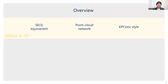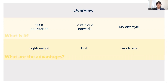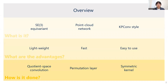As the title reveals, we developed an SE3 Equivariant Point Cloud Network. On a high level, it can be viewed as an equivariant version of the widely used Point Cloud Network, KPConv. Compared with existing Equivariant Point Cloud Networks, our model is lightweight and runs fast. It's easy to use and is compatible with any network with KPConv-style backbones. Our key innovations are the equivariant-space convolution, the permutation layer, and the symmetric convolutional kernels.